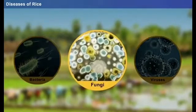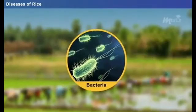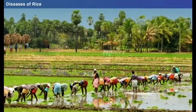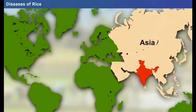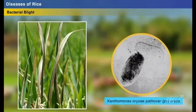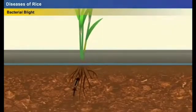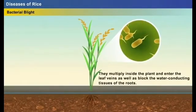Bacterial diseases are deemed to be a major threat to sustainable productivity, causing many problems in Asian countries, especially in India. Bacterial blight is one of the major bacterial diseases causing major losses in productivity. It is caused by the bacterium Xanthomonas oryzae pv. oryzae. The organisms enter the plant through the pores of the leaves and roots, multiply inside the plant, enter the leaf veins, and block the water-conducting tissues of the roots.